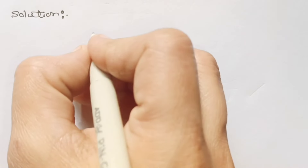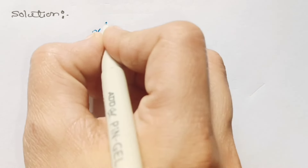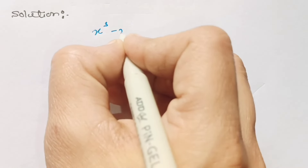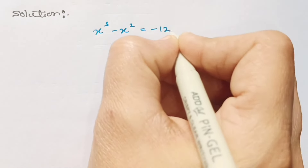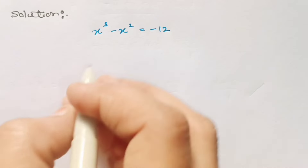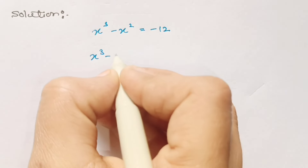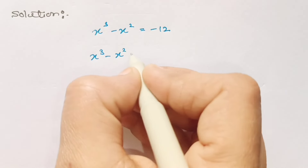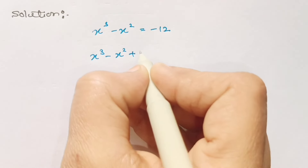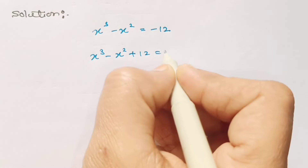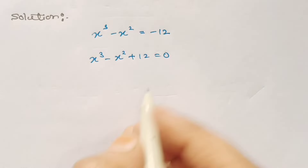Come to the solution. Here we have x cubed minus x squared is equal to minus 12. By moving minus 12 to the left hand side we get x cubed minus x squared plus 12 is equal to 0.